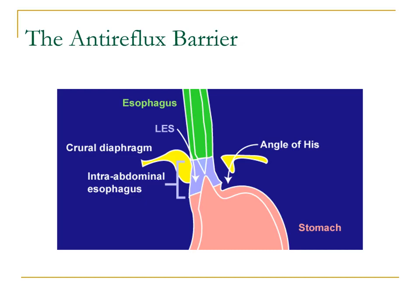This slide shows the anti-reflux mechanisms in our body. You can appreciate the presence of the diaphragm crura separating the intrathoracic area from the intra-abdominal area with the different pressures. You can also appreciate the angle of Hess, which is the angle the esophagus enters the fundus of the stomach. And the most important part is the lower esophageal sphincter, which is actually not an anatomical sphincter.